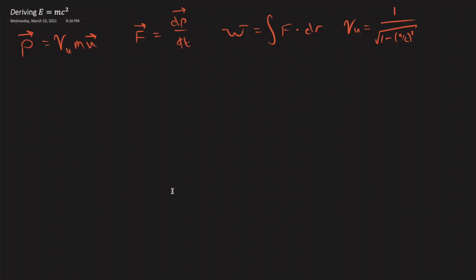Today I have a really interesting video, and we're going to derive E equals mc squared. More specifically, we're going to derive the relativistic correction to the kinetic energy equation, and that's more well known as one-half mv squared.